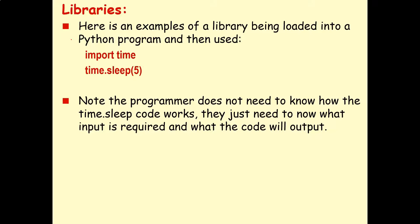and you don't have to program it yourself. Here we have a very simple example of some library code being loaded into a Python program and then used. We start by loading the code in by saying 'import time', and then at some point later on in our program we say 'time.sleep' with five in the brackets to denote five seconds. The programmer does not need to know how time.sleep works — they just need to know what input is required and what the code will output. I just need to know how to use it and that saves me having to program it myself.